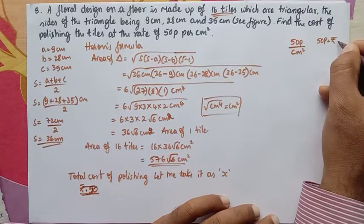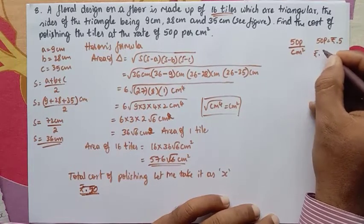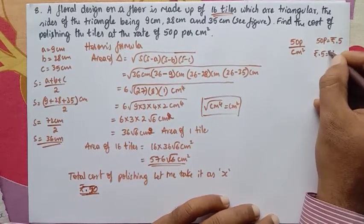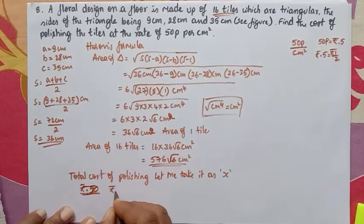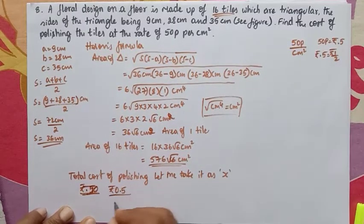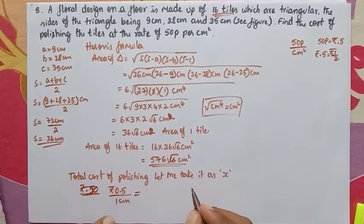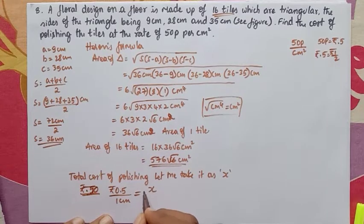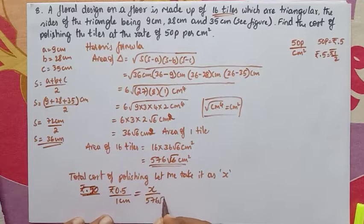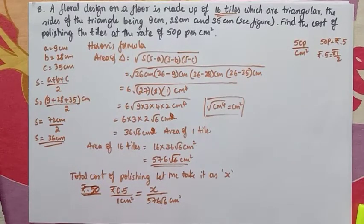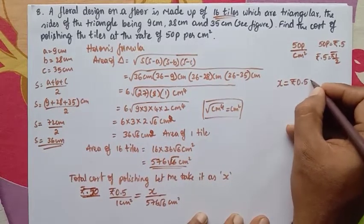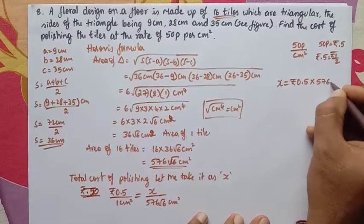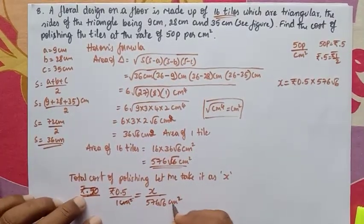50 paise = Rs 0.5 per centimeter square. Let x be the total cost in rupees for 576√6 cm². We cross-multiply: x = 0.5 × 576√6, and the centimeter square units cancel.